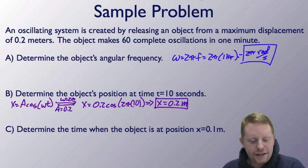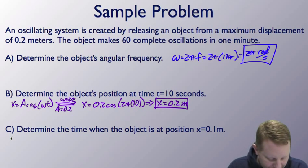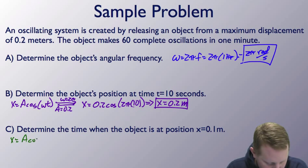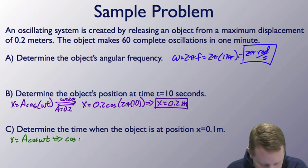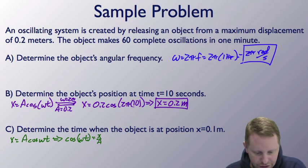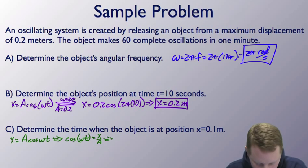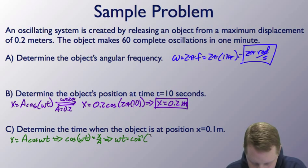And finally, determine the time when the object is at position x equals 0.1 meters. Well, if x is equal to a cosine omega t, then we could write that the cosine of omega t is equal to x over a. Just solving this for the time, which implies that omega t must be equal to the inverse cosine of x over a.